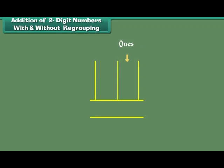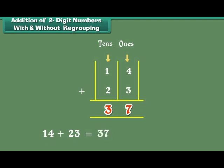The digits at the 1s place are 4 and 3. 4 plus 3 is equal to 7. The digits at the 10s place are 1 and 2. 1 plus 2 is equal to 3. Therefore, 14 plus 23 is equal to 37.